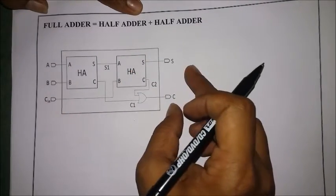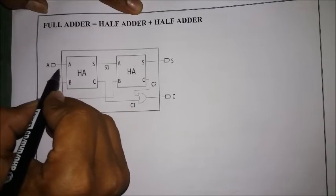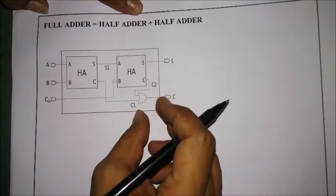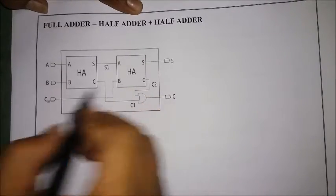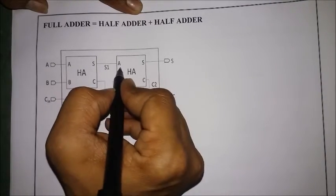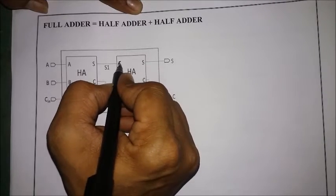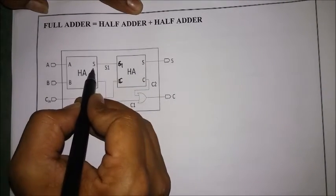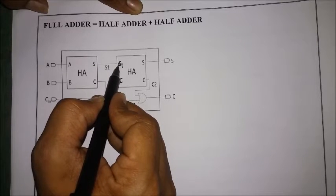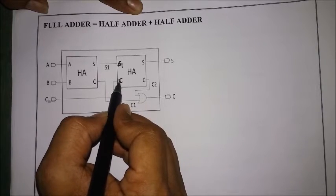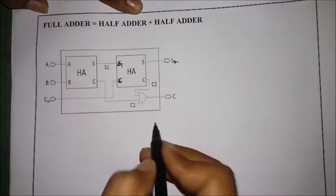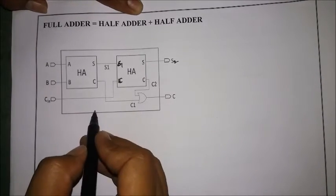Here is a block diagram showing how we are connecting two half adders to get a full adder output. The first half adder is given two inputs A and B. The second half adder also has two inputs: S1, which is the sum output of the first half adder, and the third input C. The total full adder sum is S2 and the carry is C.